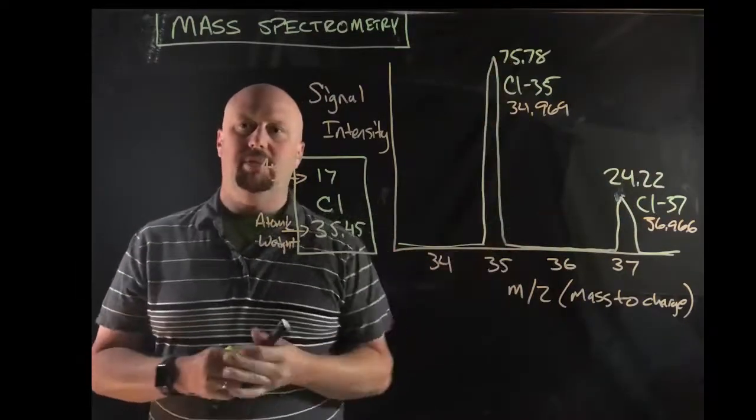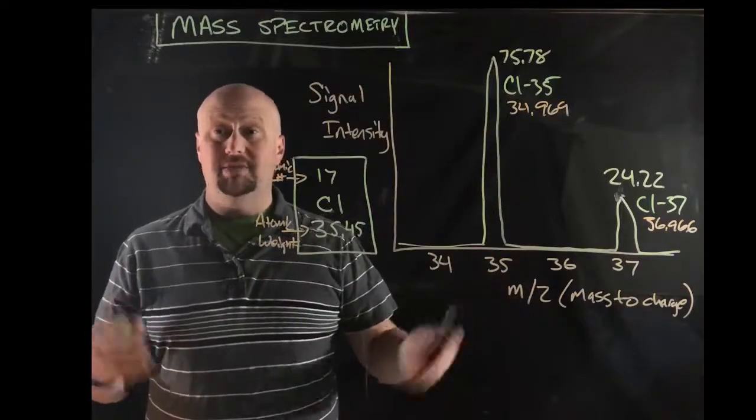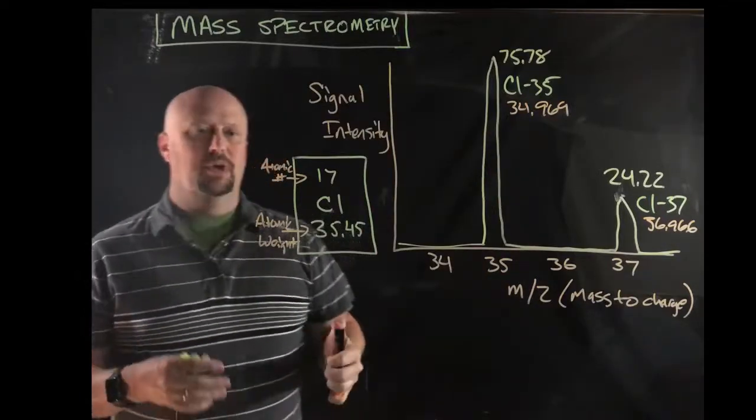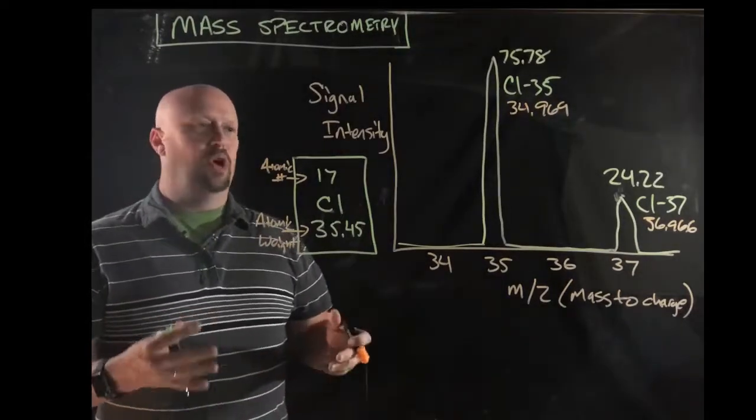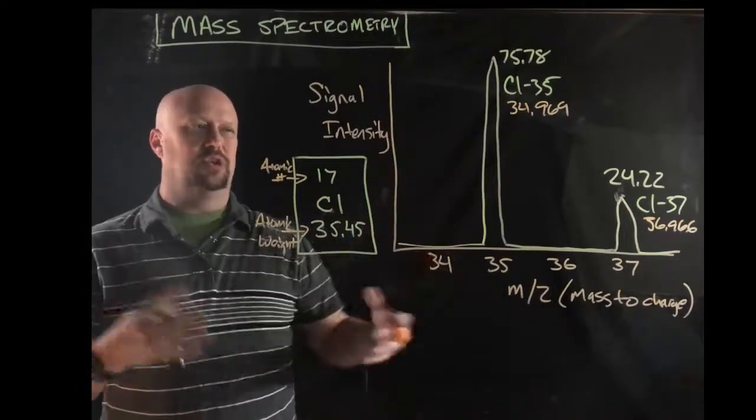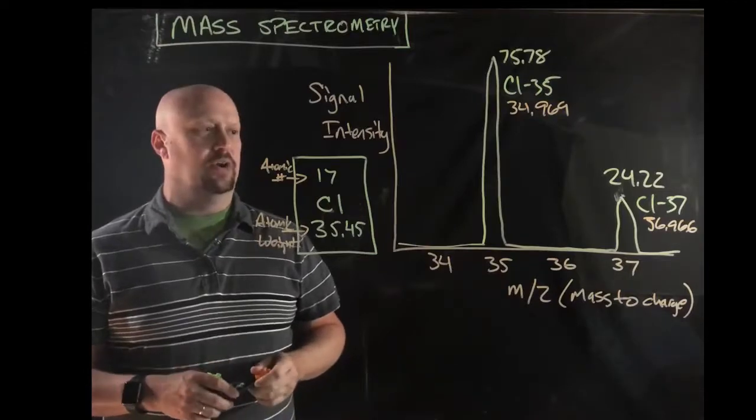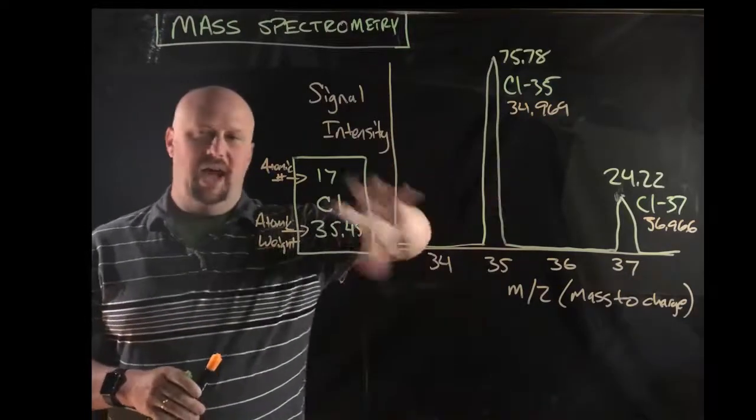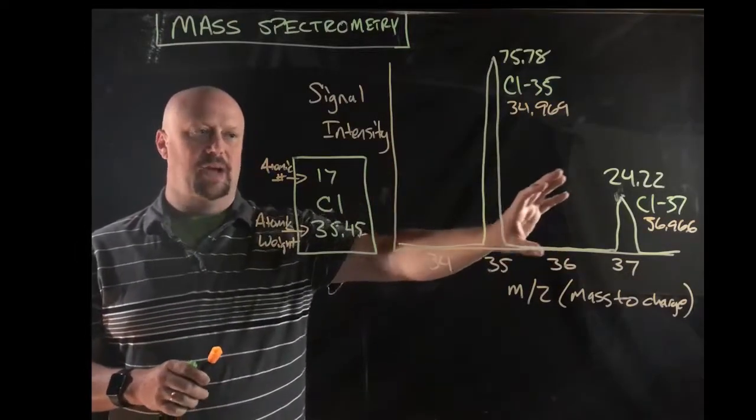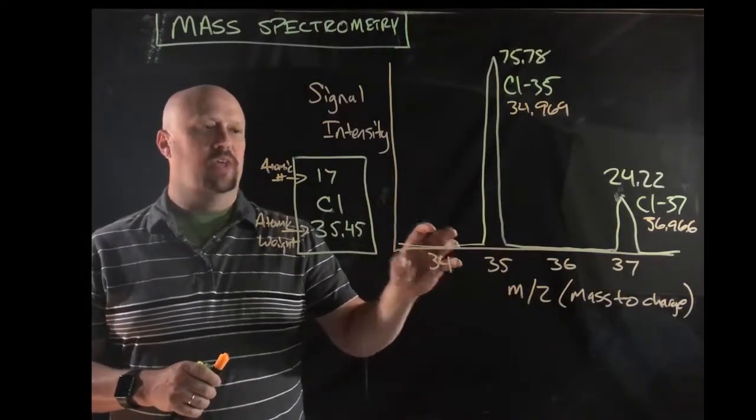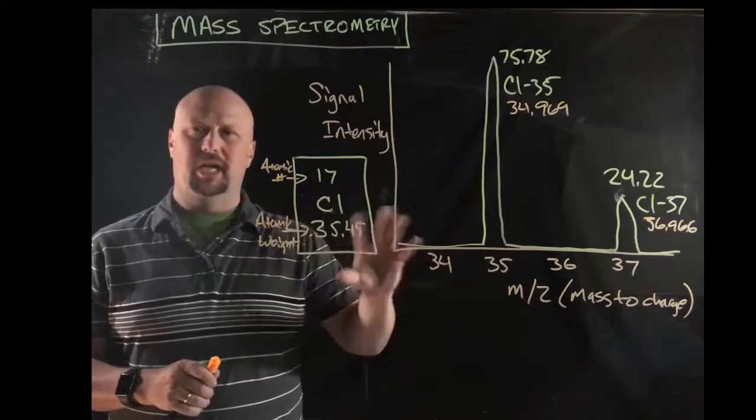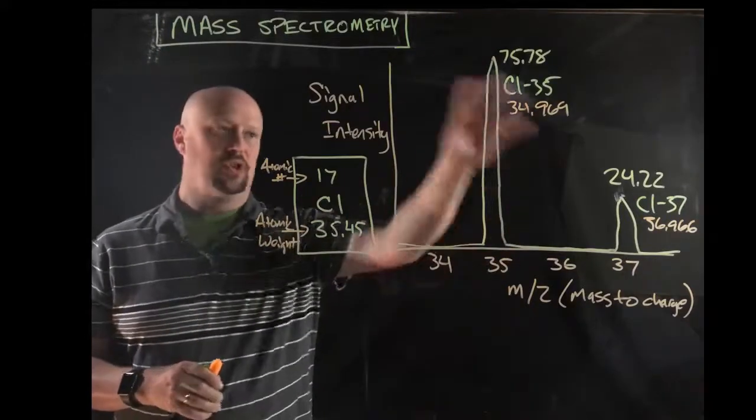The peaks are going to be different heights relative to each other. And that's why when we're doing the calculations for this, and you may have done some of these already, we would worry about the relative abundance. In other words, what's their abundance relative to each other? So that's what the graph would look like coming out of the mass spec. I'm going to erase most of the graph and stuff, and then we're going to talk about the calculations. Like, what does that look like in terms of the calculations? What does all this mean?